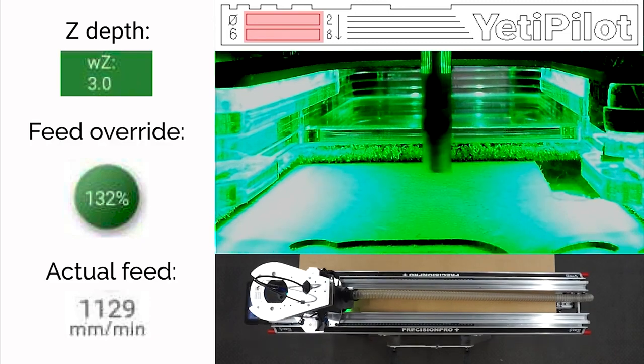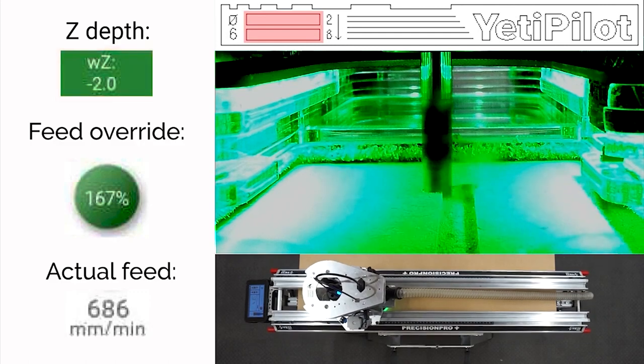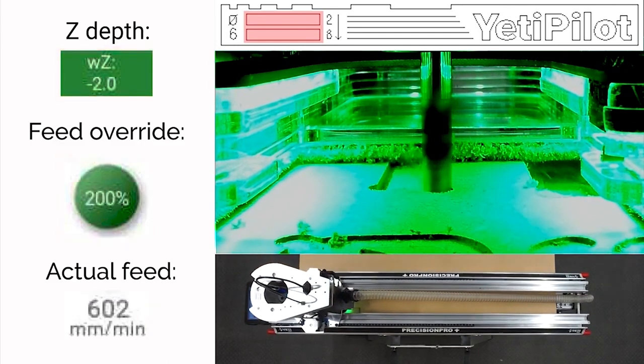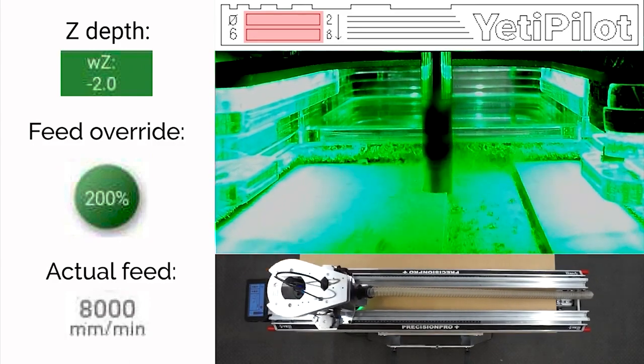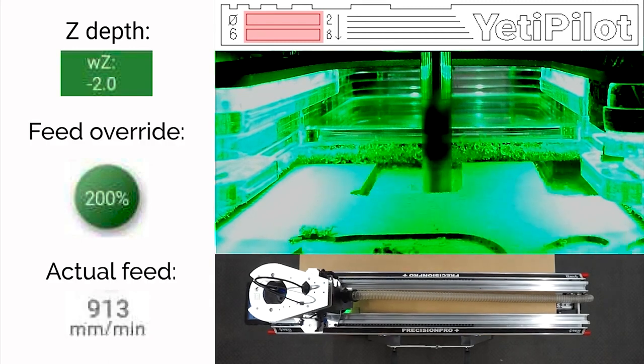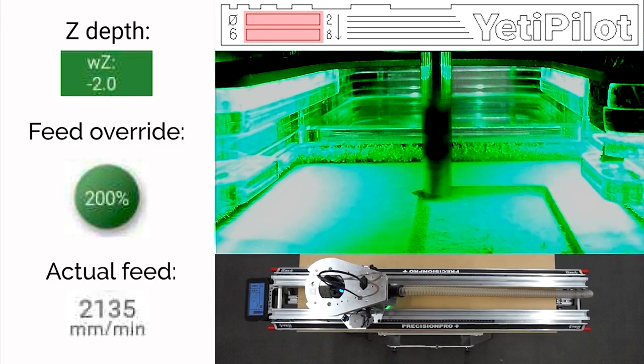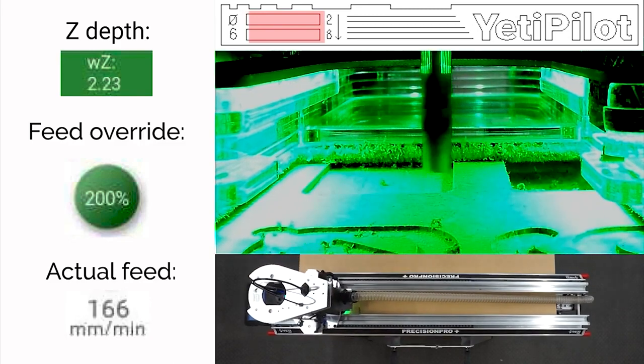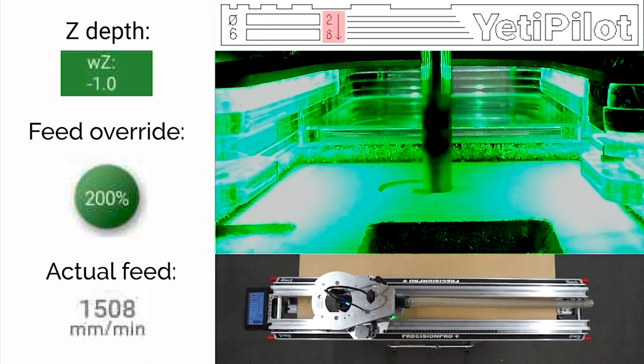The next pocket is much shallower, it's only two millimeters deep, and you can see immediately Yeti Pilot is saying come on let's go quicker and it's overriding that feed to a full 200%.